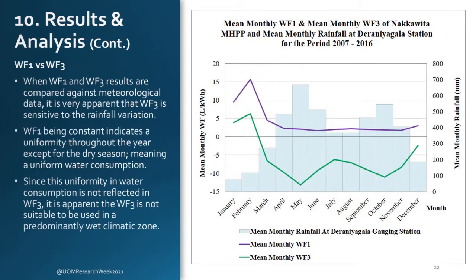When water footprint method 1 and water footprint method 3 are compared, water footprint 3 follows the rainfall variation while water footprint 1 presents uniformity throughout the year depicting uniform water consumption. Considering the predominantly wet climate of the region where water footprint 3 yields negative values, it can be deduced that water footprint method 3 is not suitable to evaluate the given context.